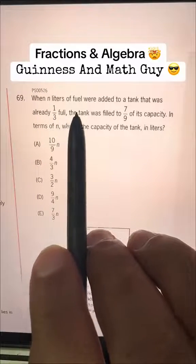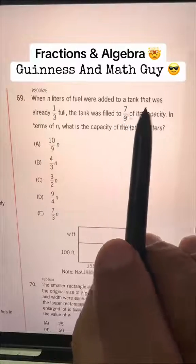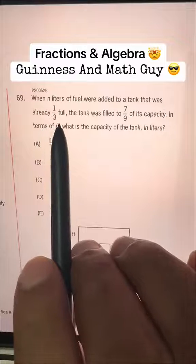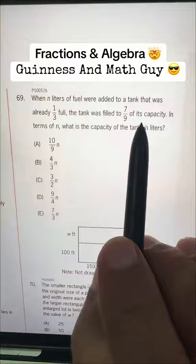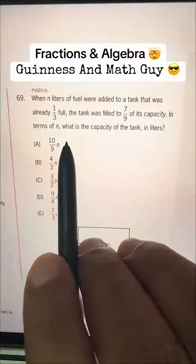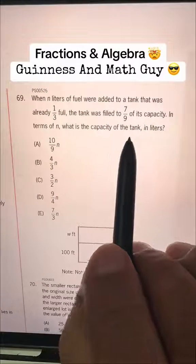When N liters of fuel were added to a tank that was already one-third full, the tank was filled to 7 over 9 of its capacity. In terms of N, what is the capacity of the tank in liters?